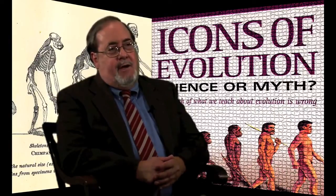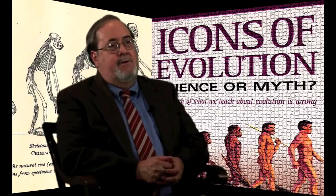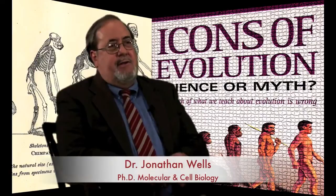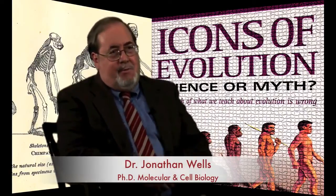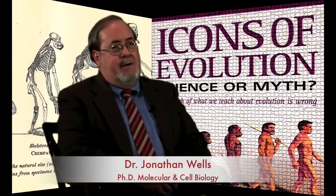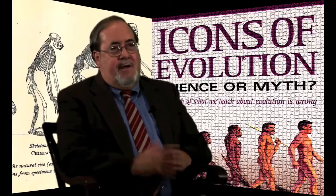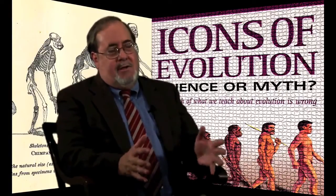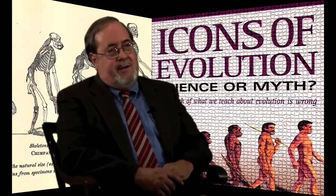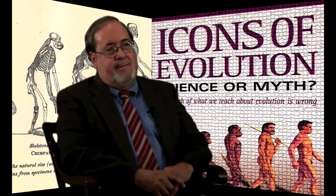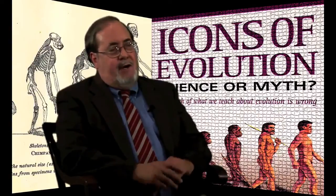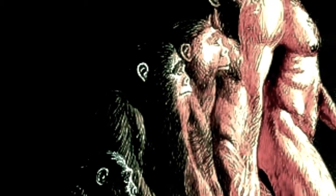The last icon of evolution I wrote about I called the ultimate icon. It's the famous ape to human progression, and the reason I call it the ultimate icon is because it's the one that really matters to someone who wants to tell a Darwinian tale — that is, a tale about how we came here accidentally as a byproduct of material causes. Typically the icon shows a hunched-over chimpanzee-like creature gradually morphing into an ape-man and then a modern human.